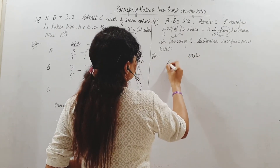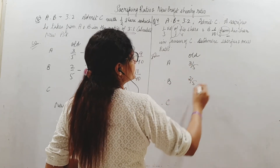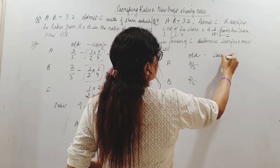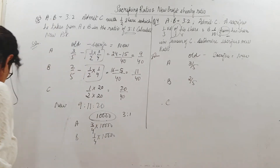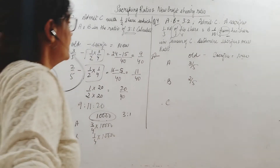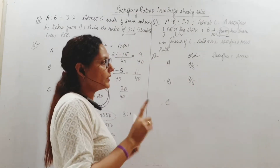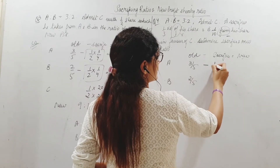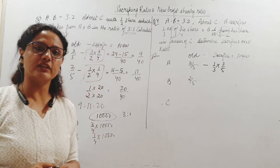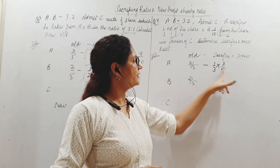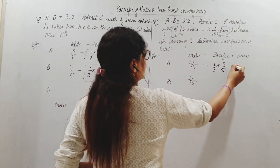Old ratio of A and B: A has 3 by 5, B has 2 by 5. A is giving away 1/3 of his share. His share was 3/5, so 1/3 of 3/5 equals 1/5. A's sacrifice is 1/5 — that is what he is giving to C. Whatever he is giving is his sacrifice.